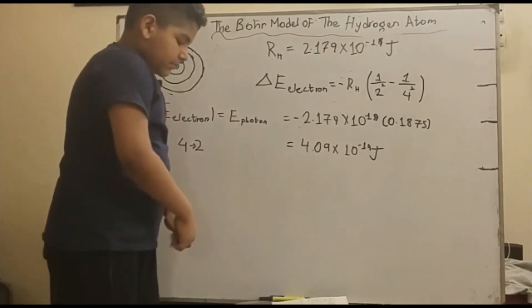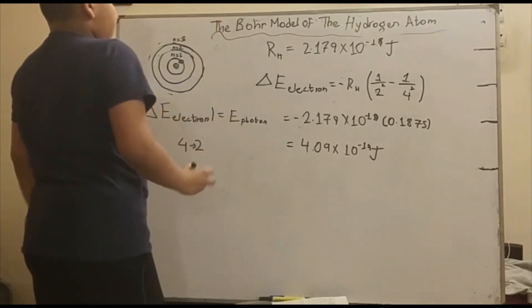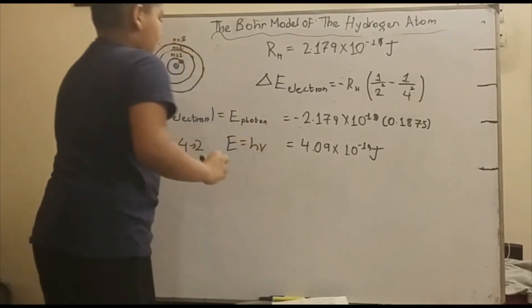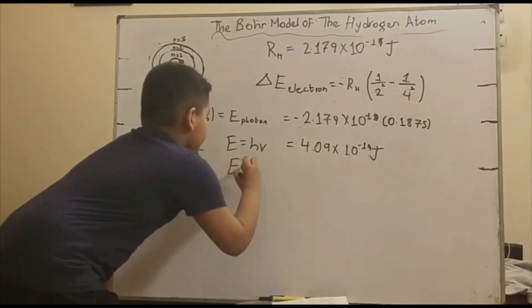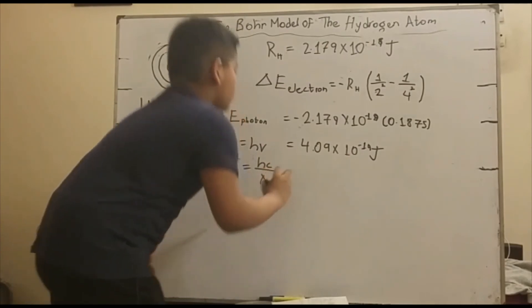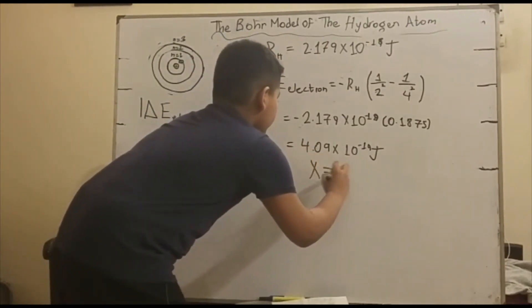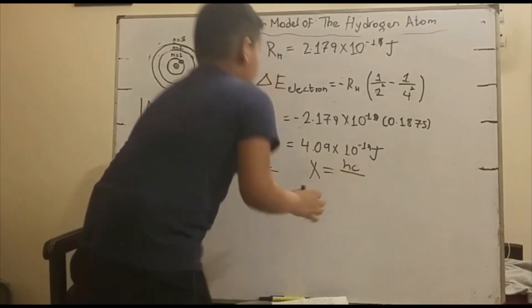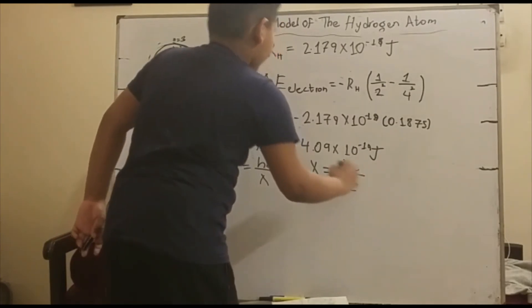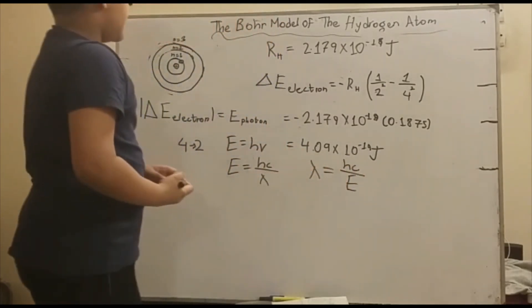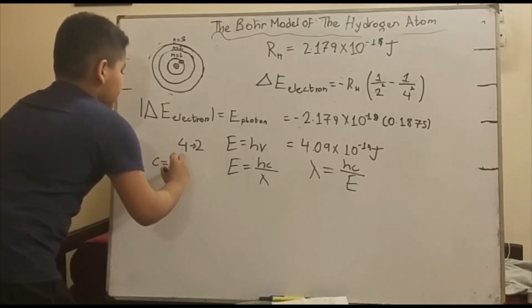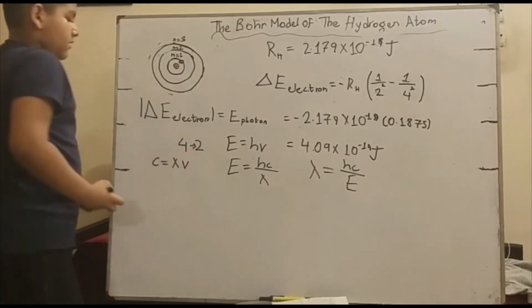And from energy, we can get frequency, and from frequency we can get the wavelength. Remember, the substitute of nu would be c over the wavelength, the speed of light over the wavelength, if you knew this equation: the speed of light equals the wavelength times the frequency.